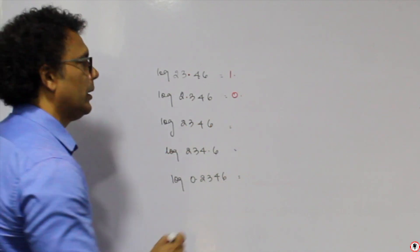For log of 7 we had found 0.8451. Now checking anti-log: 0.84 in column 5 with difference of 1. Looking up 0.84 in 5 gives 6998. The difference of 1 is 2. So 6998 plus 2 = 7000. Characteristic is 0, so decimal after 1 digit: answer is 7.000, which is 7. This confirms that anti-log and log are inverse of each other.